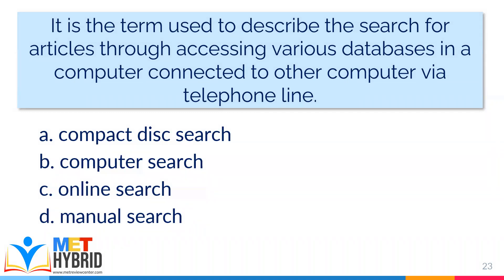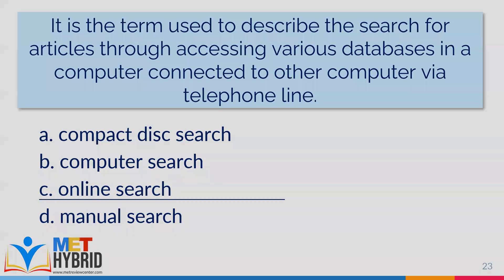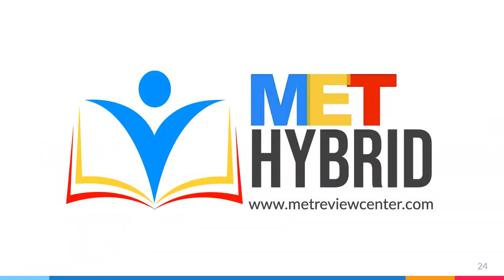It is the term used to describe the search of articles through accessing various devices in a computer connected to other computers via telephone line. A, compact disk search; B, computer search; C, online search; D, manual search. The answer is letter C, online search — since the searching was facilitated using multiple computers connected through a telephone line, which we can assume as the internet. That ends our video lecture. For more information, you can browse the other videos in our MET mobile app. Thank you so much and God bless you all.